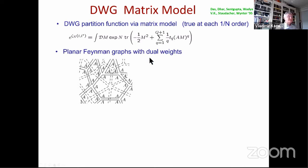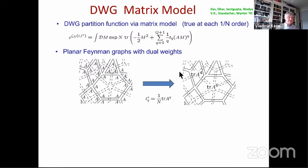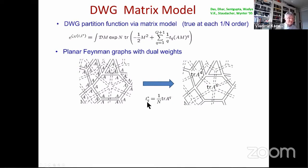What does this produce for Feynman graphs? When you expand it, instead of just Kronecker delta symbols, you have insertions of A around each loop. Around the face you have a collection of A's exactly matching the order of the loop, so that for a loop of order six you get the trace of A to the sixth power, and for a loop of order four the trace of A to the fourth. You can then associate the dual couplings t-star with traces of A to the q.